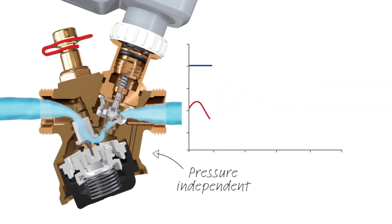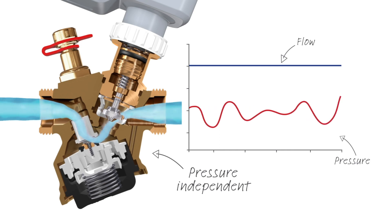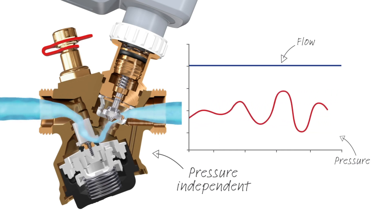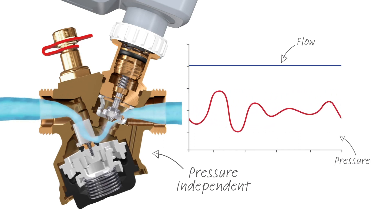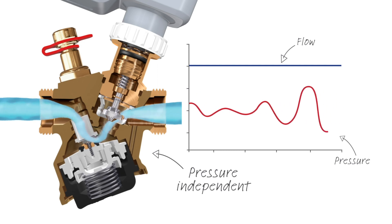TA modulator is a pressure-independent valve. It keeps the flow constant regardless of pressure fluctuations in the system and guarantees high control authority.